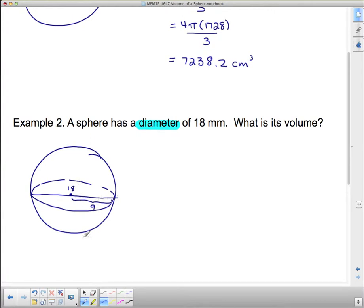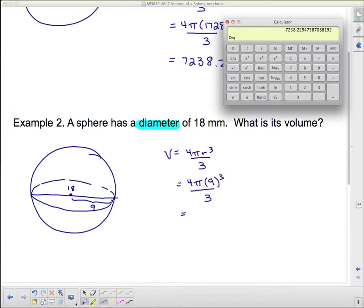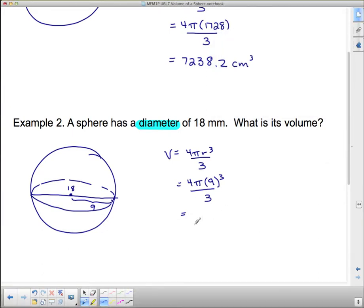So volume equals 4πr³ divided by 3, which is 4 × π × 9³ ÷ 3. And let's figure out what 9 cubed is. 9 cubed is 9 × 9 × 9—it's not 9 × 3. So 9 cubed is 729.